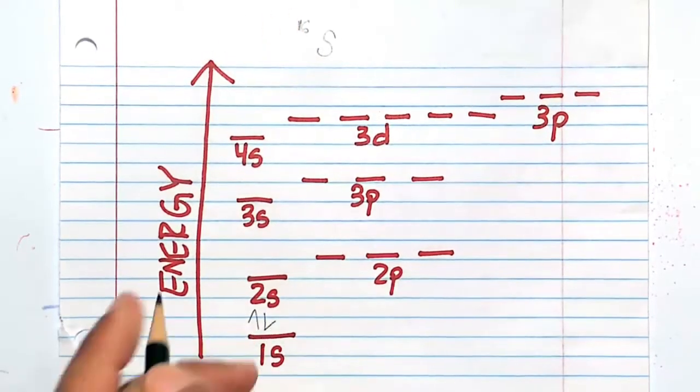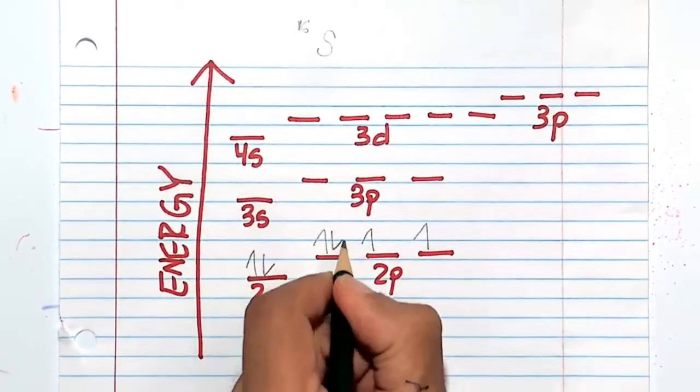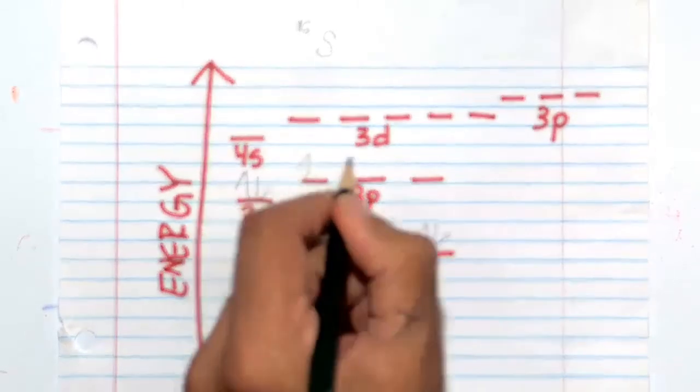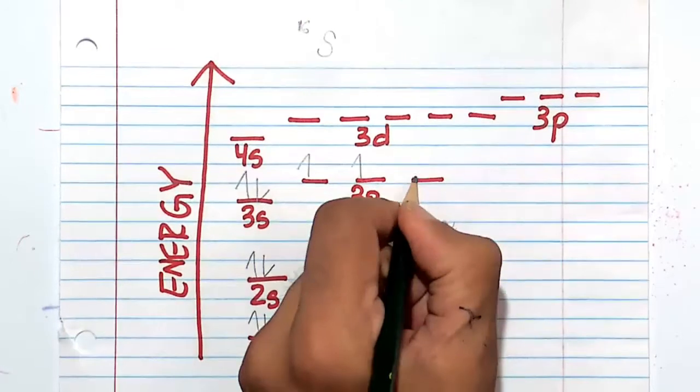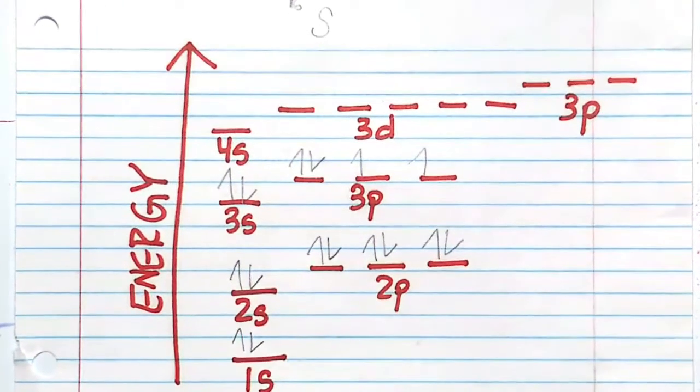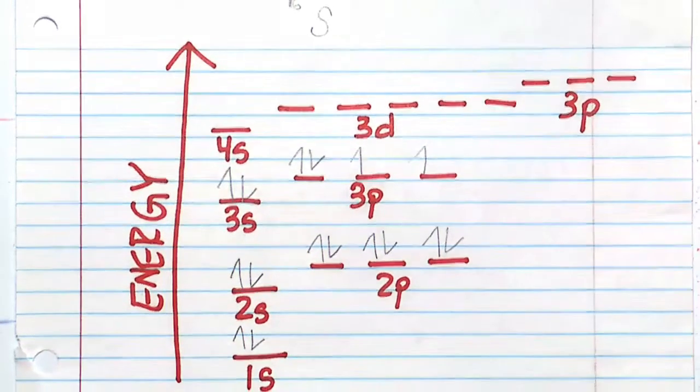So 1, 2, 3, 4, 5, 6, 7, 8, 9, 10, 11, 12, 13, 14, 15, 16. That is how the electrons are going to march for sulfur-16 neutral by itself.